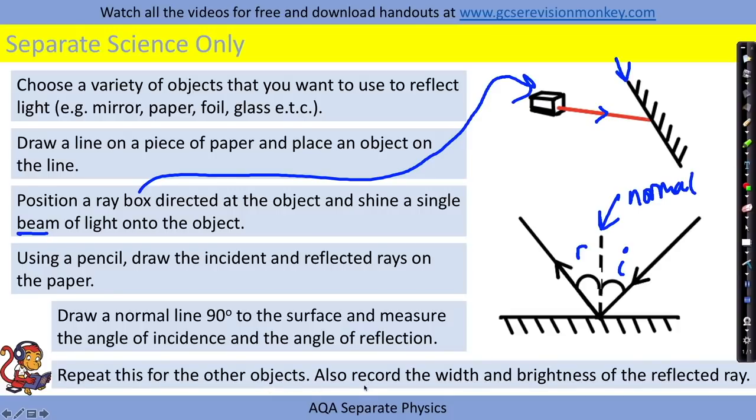You would then repeat this for the other objects and also record the width and the brightness of the reflected ray because if you've got specular reflection you're going to get a really thin and bright reflected ray coming out.